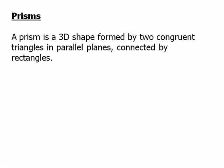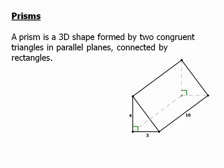First of all, let's talk about prisms. A prism is a 3D shape formed by two congruent triangles in parallel planes connected by rectangles. Here we have a 3-4-5 triangle up front; in the back we have a parallel 3-4-5 triangle, and they're connected by rectangles. It could be any kind of triangle, but most often what you're going to see on the test is that the triangle itself is a right triangle.